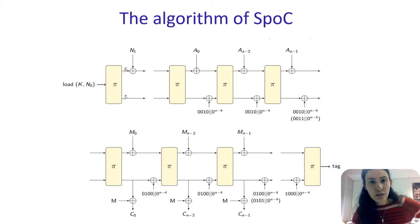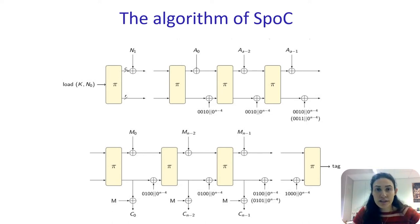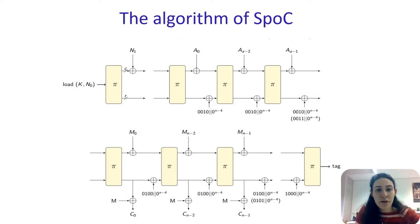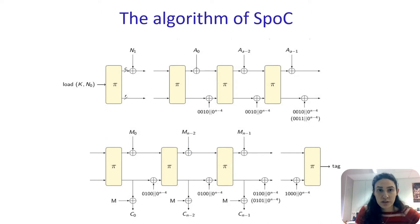The initialization is the only part that is different for the two SPOC versions. Here you can see the initialization for SPOC 64. After loading the key and half of the nonce to the state, the permutation is applied and then the second half of the nonce is added. For SPOC 128, this phase consists only of loading the key and the nonce to the state. The associated data and message processing phases are very similar. After each block is absorbed to the state, a control signal is added to the rate part. The value of this constant depends on the phase and the length of the block.